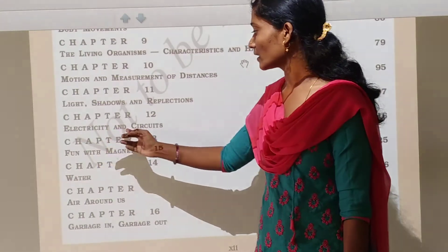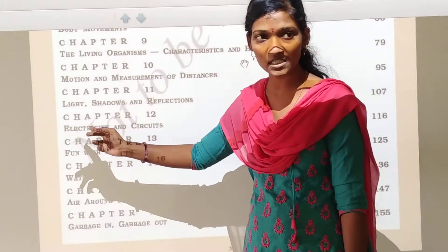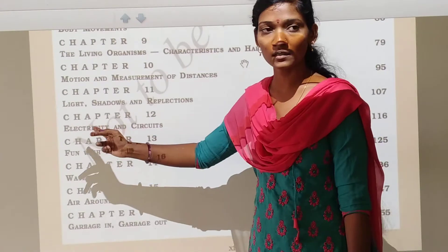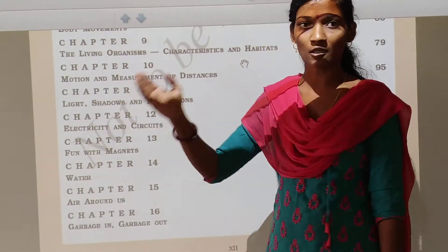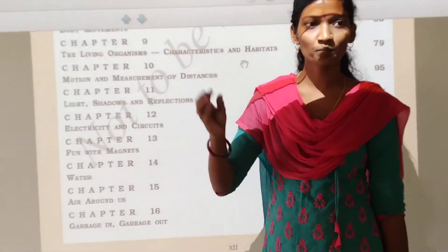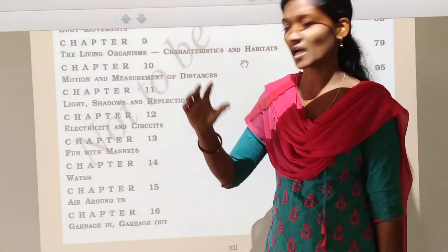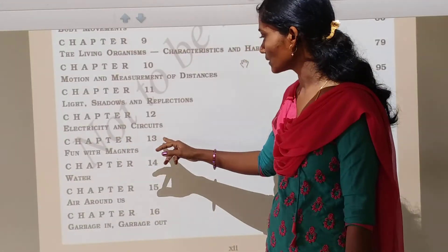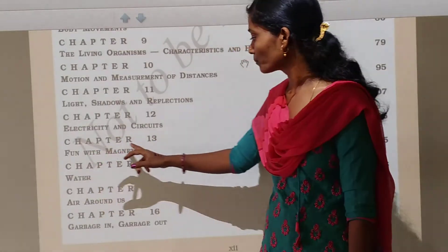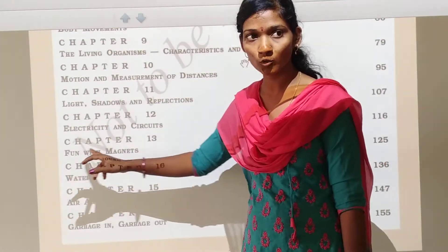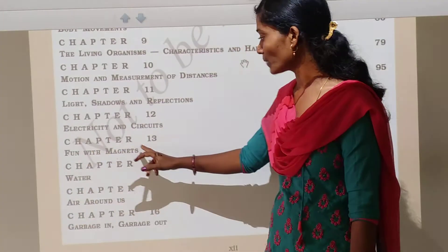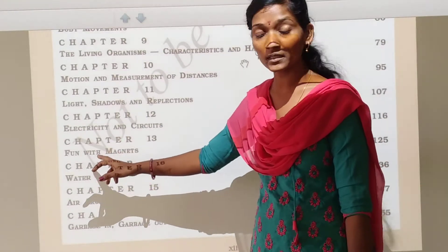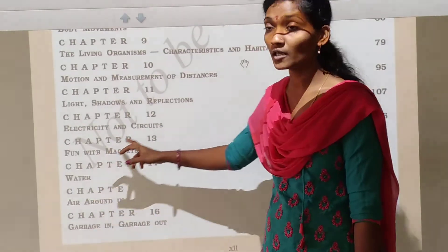Next, chapter number 12: Electricity and circuits. In this lesson we study about the circuit diagram, battery, bulb and charge. Next, chapter number 13: Fun with magnets. In this chapter we study about the different types of magnets.